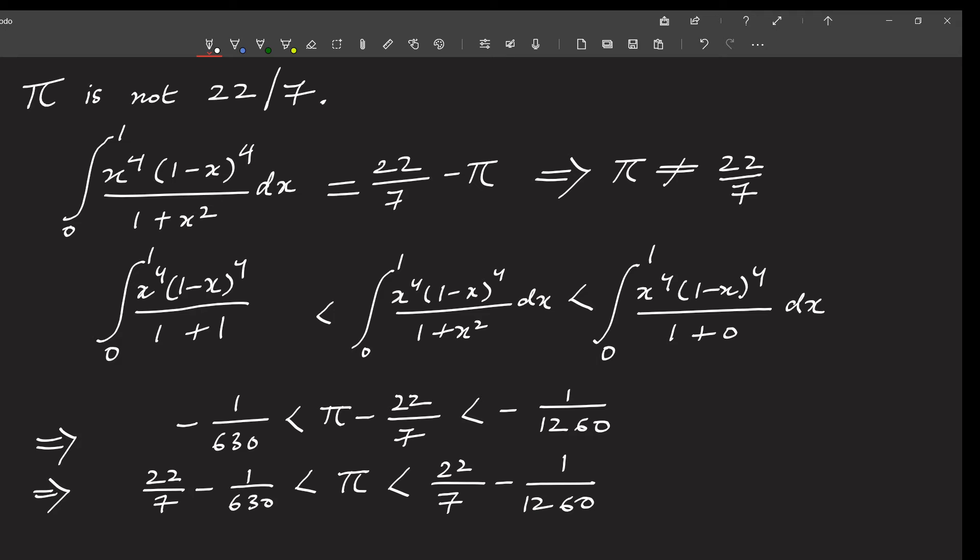So now we can evaluate all of these three integrals, and then after simplifications, what we get is 22 by 7 minus 1 by 630. This is less than pi, and this is less than 22 by 7 minus 1 by 1260. Thus, we have estimated how far 22 by 7 is from the true value of pi. By actually computing the upper bound and the lower bound to two or three decimal places, we find that 3.1412 must be less than pi, and this must be less than 3.142. So pi lies between these two values.